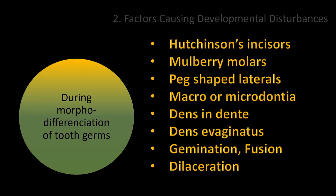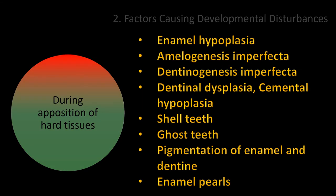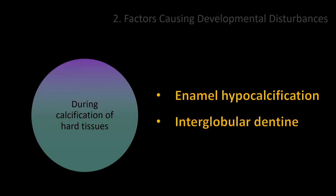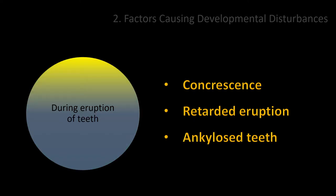Defects, variation in size or shape of the teeth may occur during the morphodifferentiation period. Others affect the apposition of dental hard tissues and matrix formation. After apposition comes the calcification period — the enamel and dentine may lack calcification. Concrescence, retarded eruption, and ankylosis of one or multiple teeth may cause malocclusion.